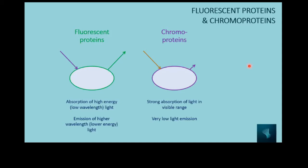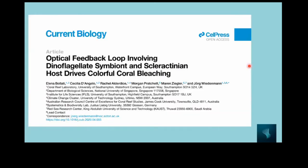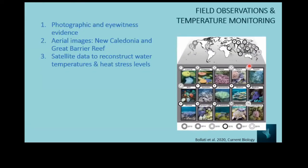Now we are well prepared to understand what the authors of the paper did. They combined field observations with lab experiments to find out what really happens and why corals become colorful and how this can protect a coral. They compiled photographic evidence and asked eyewitnesses about colorful bleaching, collected aerial images from New Caledonia and the Great Barrier Reef, and looked at satellite data to see water temperatures during colorful bleaching events.